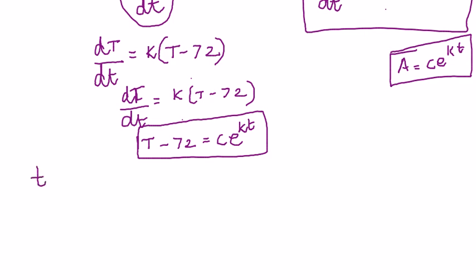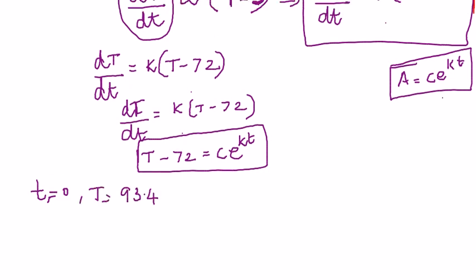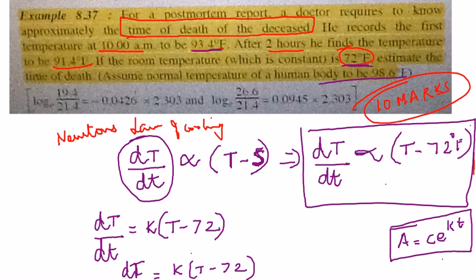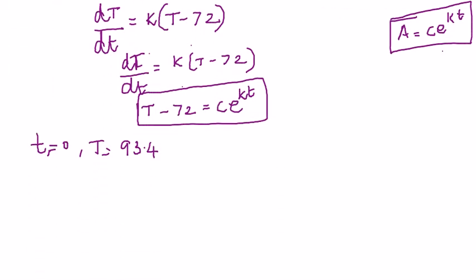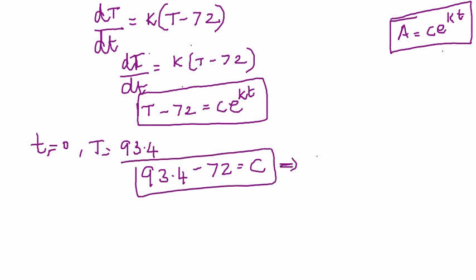At time t = 0, that is at 10 o'clock, the temperature was 93.4°F. Substituting into the equation: 93.4 - 72 = Ce^0, so C = 21.4. We now know that C equals 21.4.